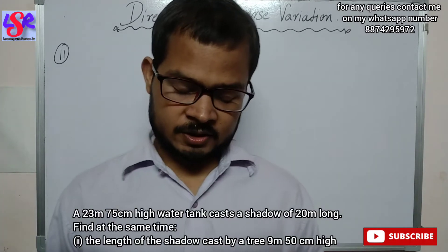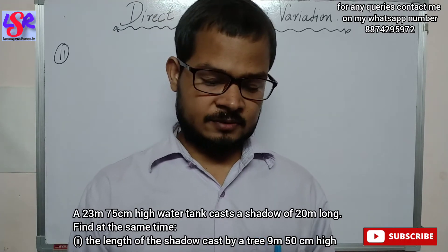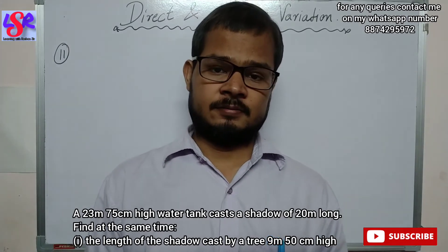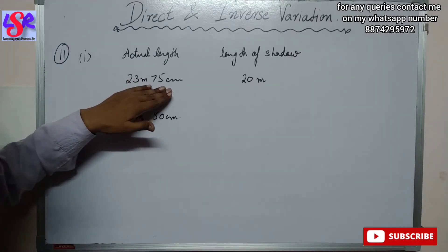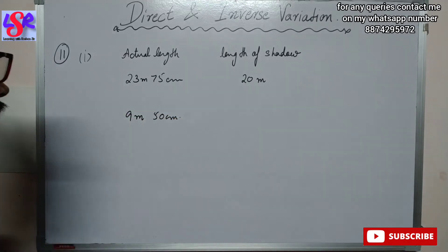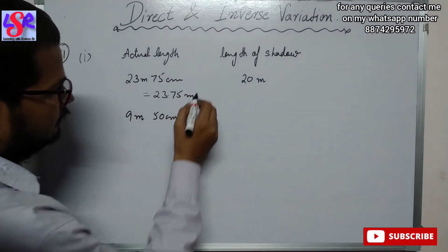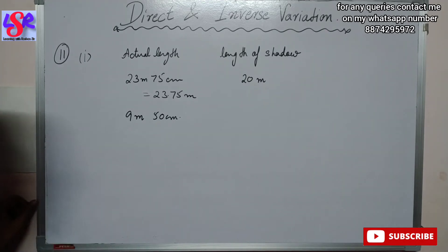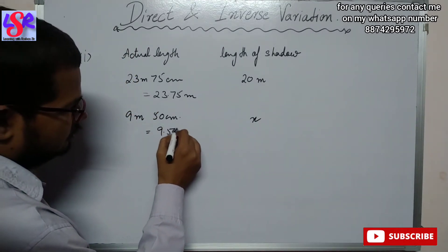Now let's do question number 11. A 23 meter 75 centimeter high water tank casts a shadow of 20 meter long. Find, at the same time, the length of the shadow cast by a tree that is 9 meter and 50 centimeter high. The actual length of the water tank is 23.75 meter casting a shadow of 20 meter. We have to find the shadow cast by a tree which is 9 meter 50 centimeter, written as 9.50 meter, and let the length of the shadow be x.